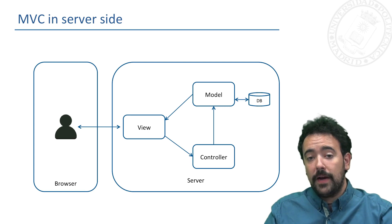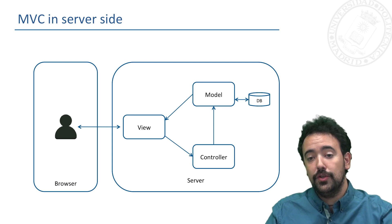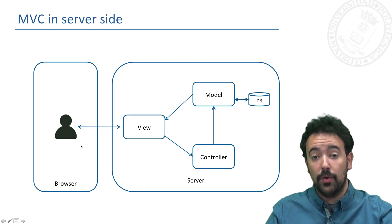When we implement an application using the model view controller pattern, we can choose to implement the pattern in the server side. As you can see here, we have the view, the model, and the controller parts implemented in the server and we just serve to the browser, to the client side, the corresponding views of the application.